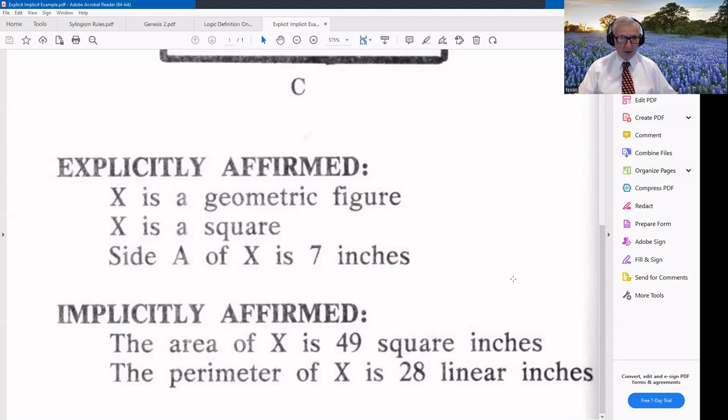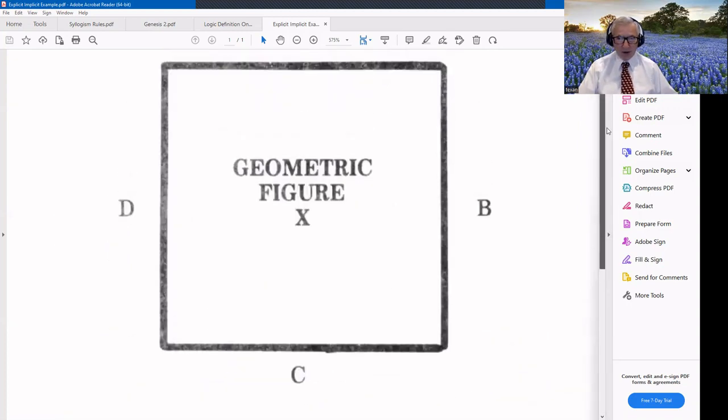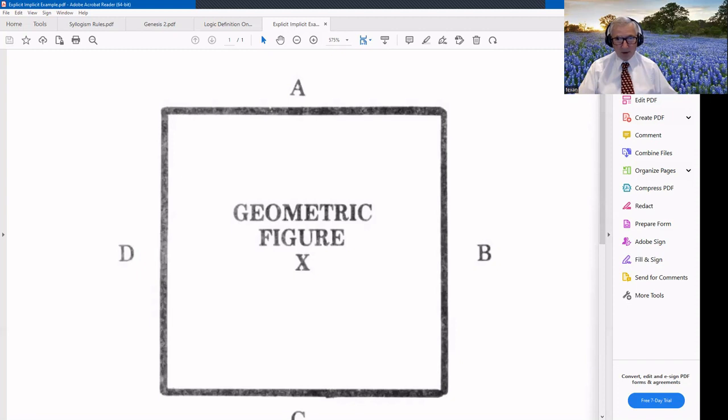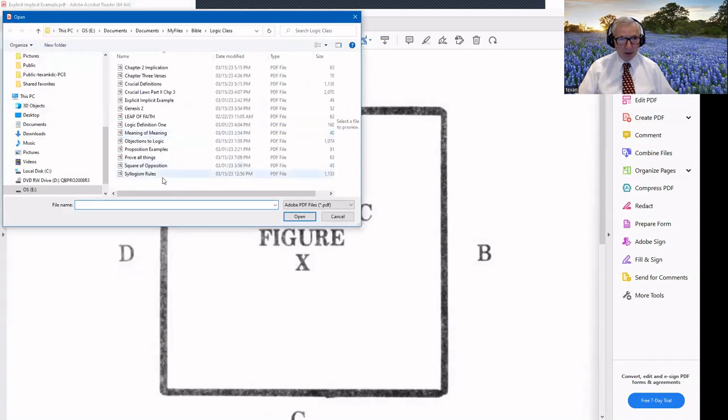And we also know that the perimeter of X is 28 linear inches. So we can use that which is explicitly stated to infer which is implicitly affirmed. And that's a very simple representation of explicit and implicit, but it's a very important one to understand.